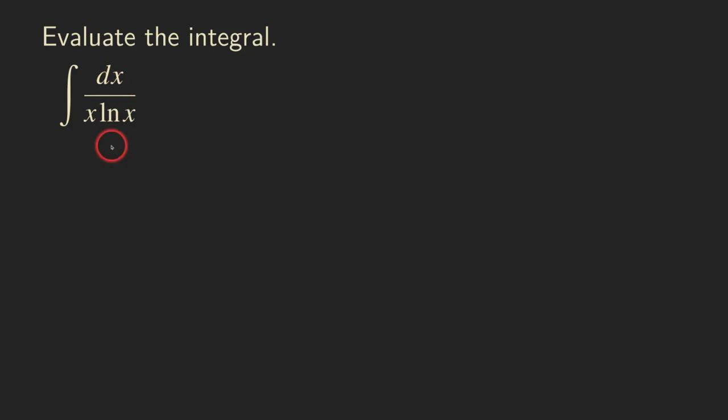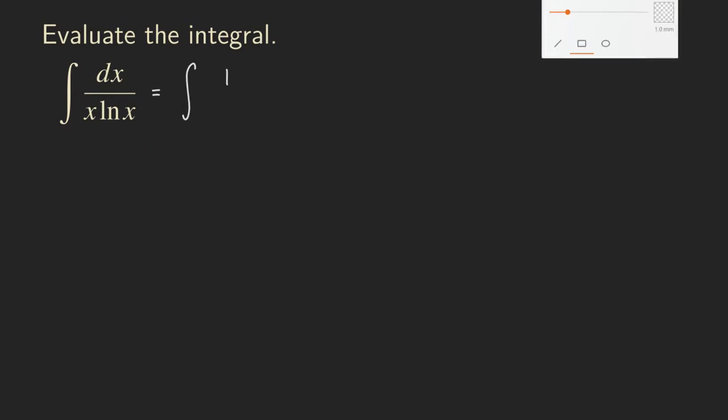We're going to get started by letting u be the ln function. The reason for why we're doing that is really because if you just rewrite this function a little bit, it actually looks like this. So we have 1 over, and then that x, then times ln of x and then times dx.